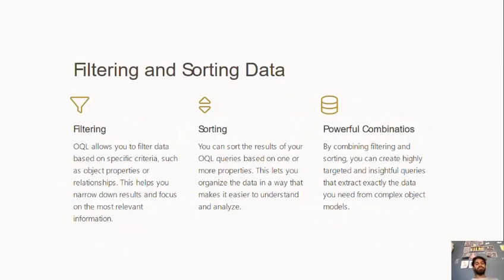Filtering and sorting. Filtering allows filtering of objects by properties and relationships, based on specific criteria that the user or client demands. It helps us to narrow down and get the most relevant results we need. Sorting in OQL queries is based on properties, allowing us to organize data and make it easier to understand and analyze. Powerful combinations can create highly targeted and insightful queries, delivering exactly the data the user or client requires.